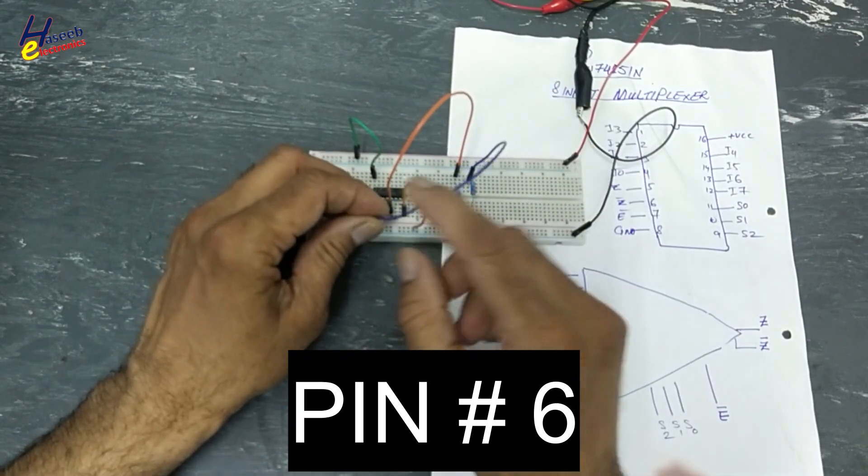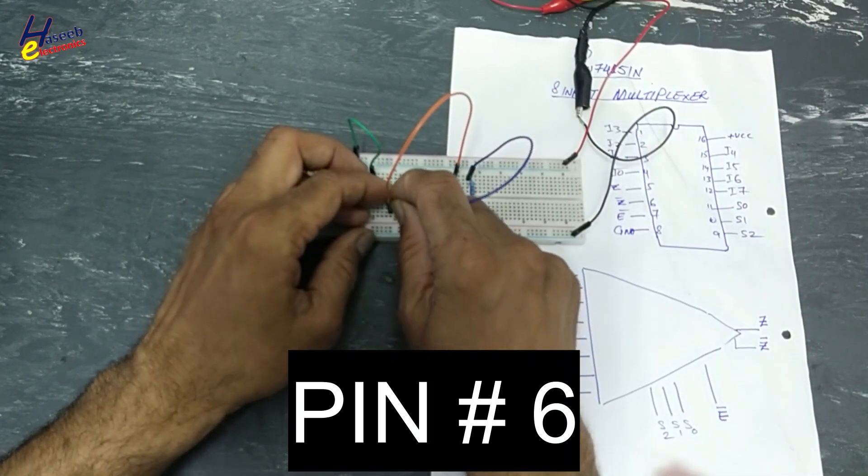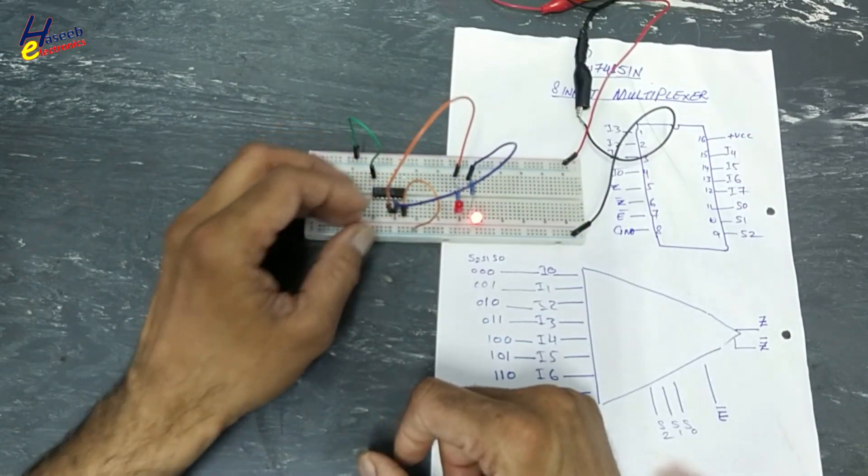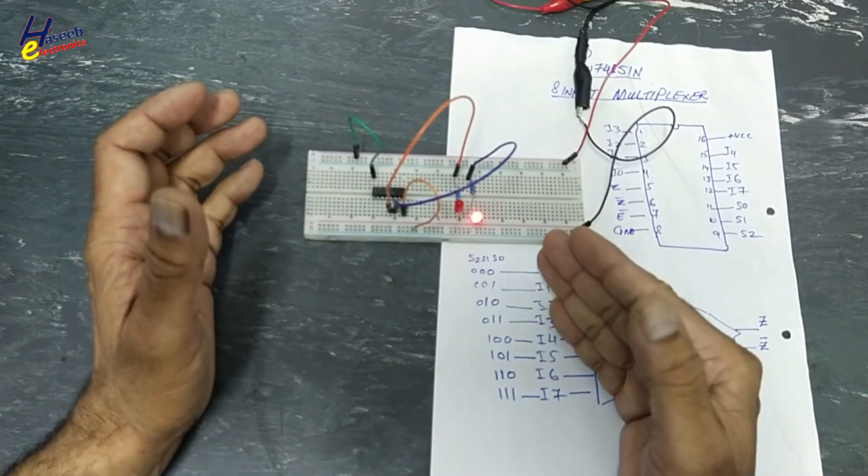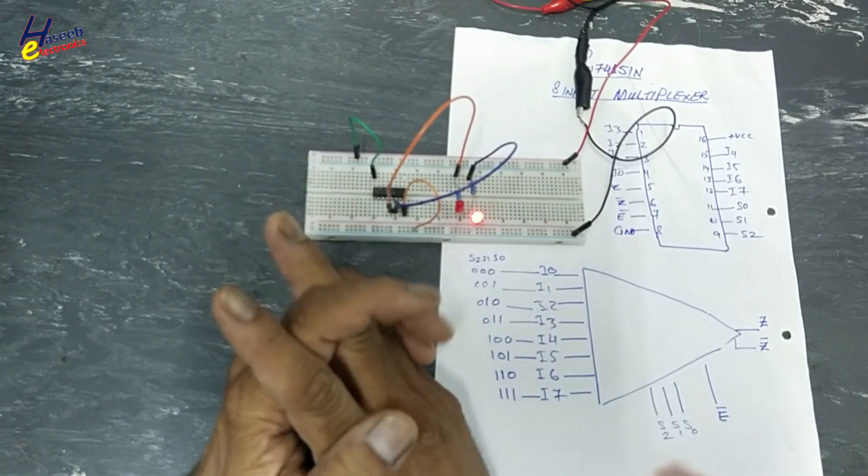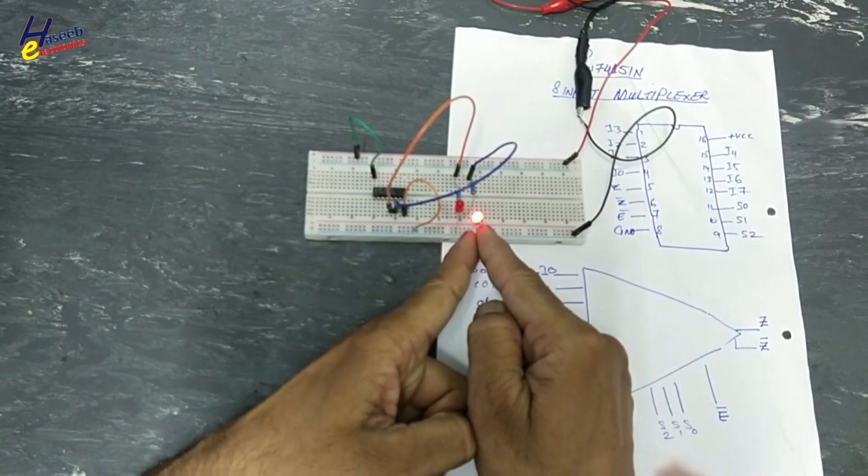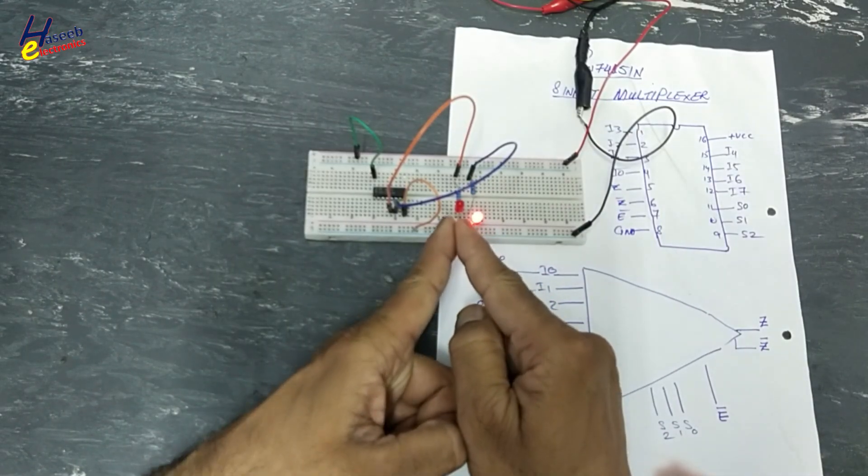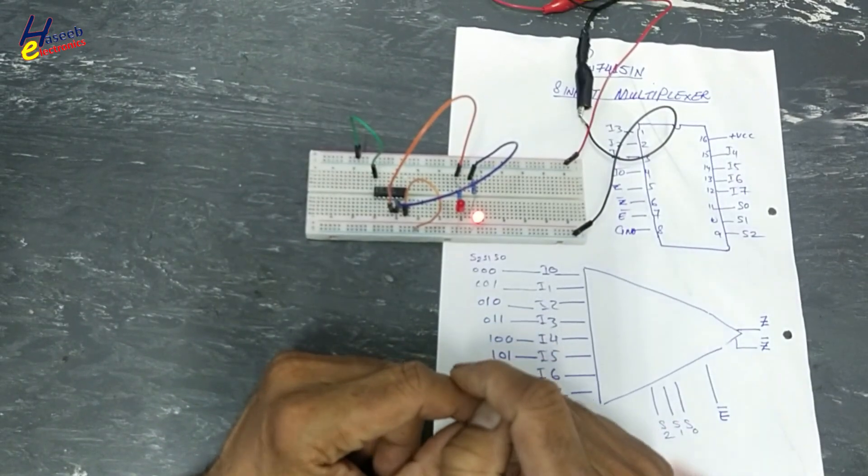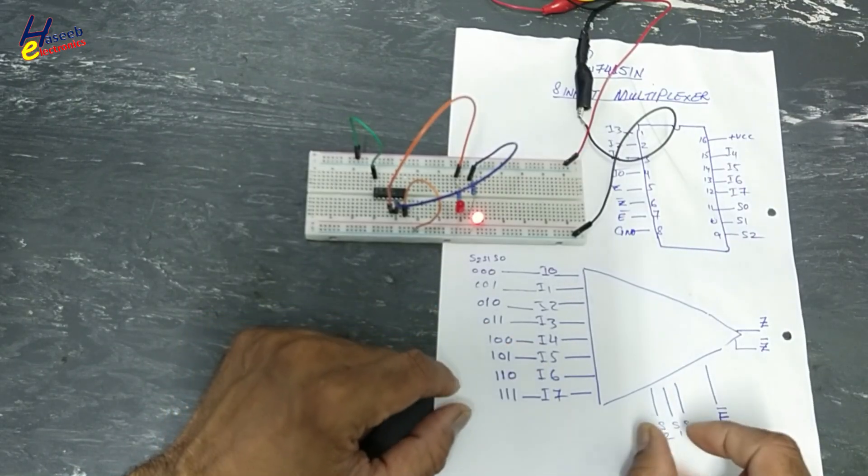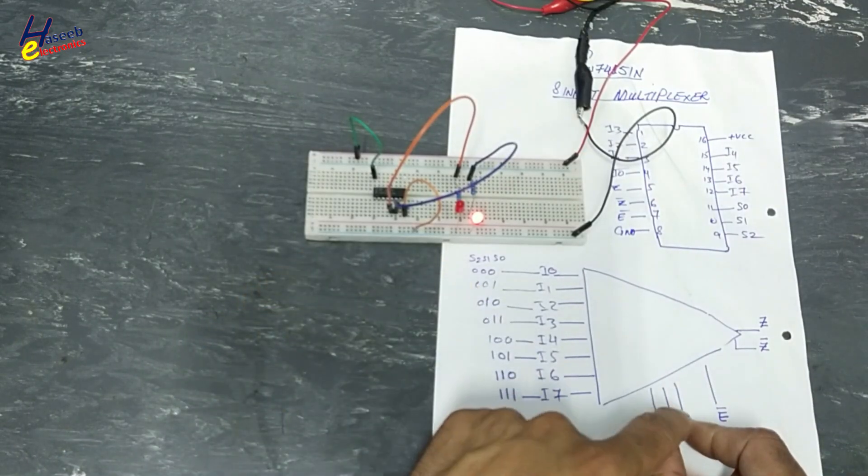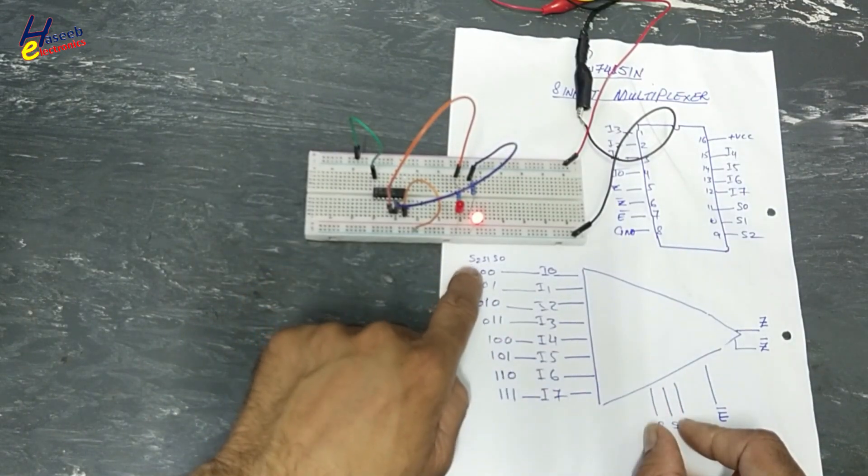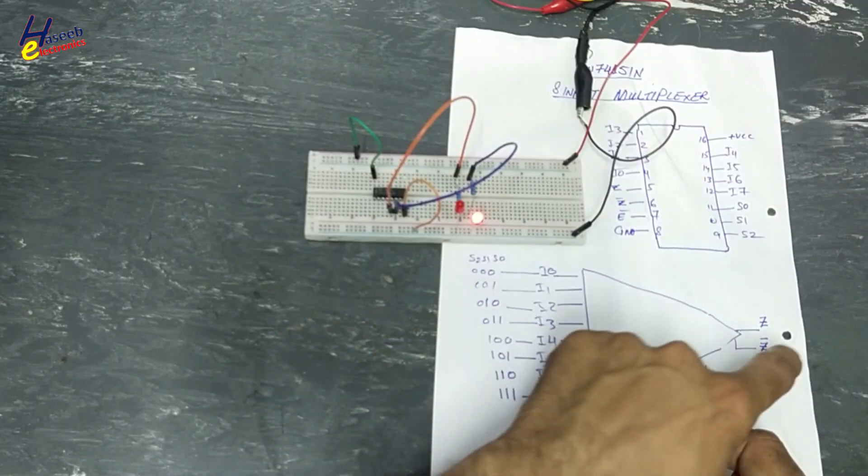At this LED, these outputs will opposite to each other. When there is no control signal, there is no enable signal, Z bar output will active. Z output is low. When enable pin address inputs will present, that selected input will reach at output.